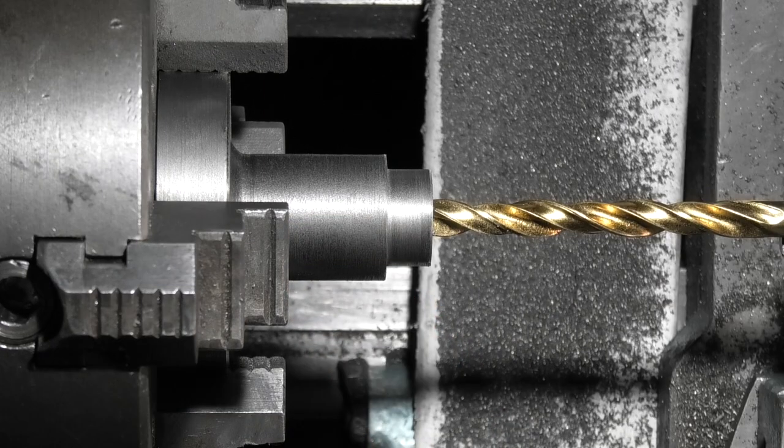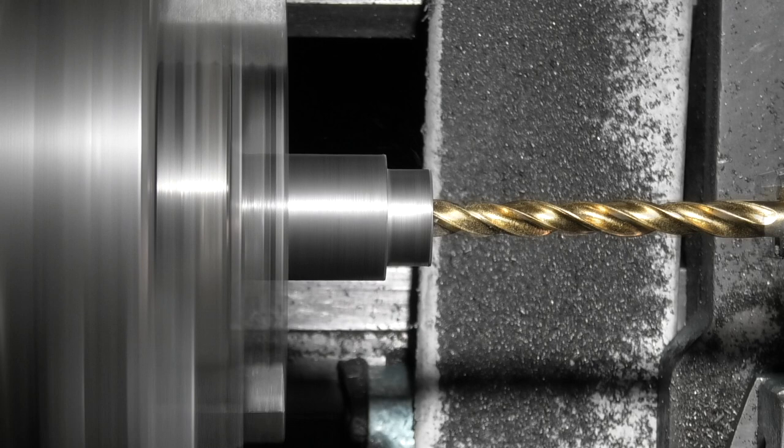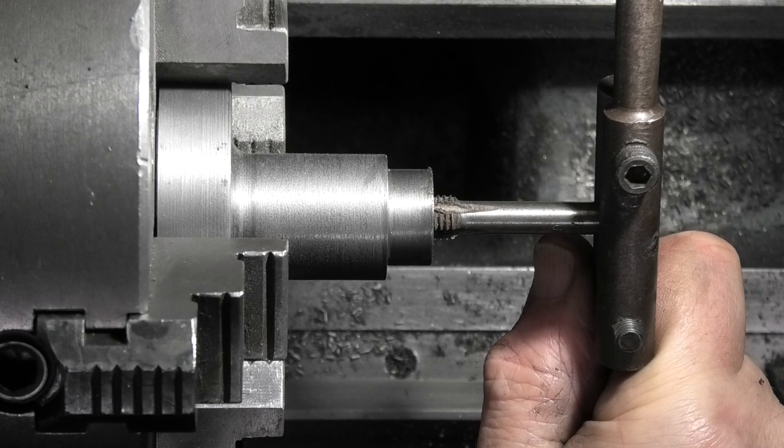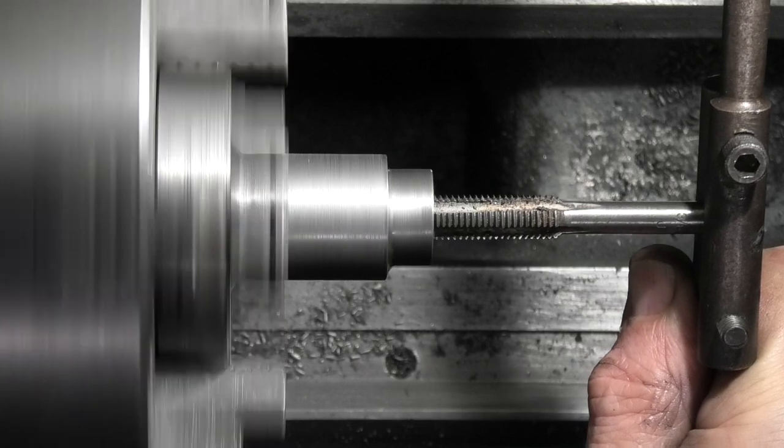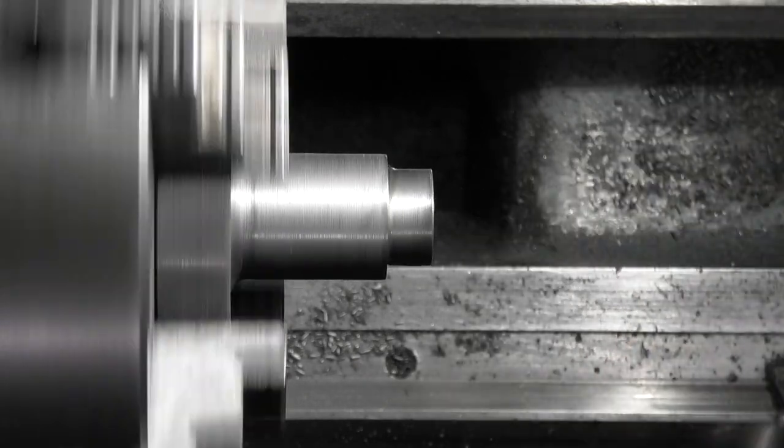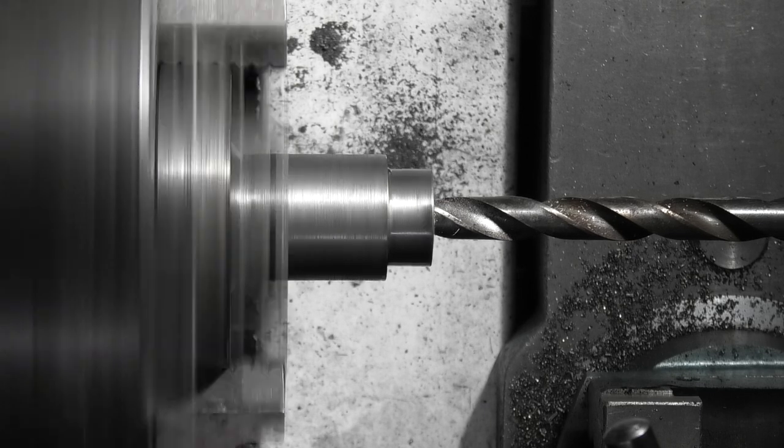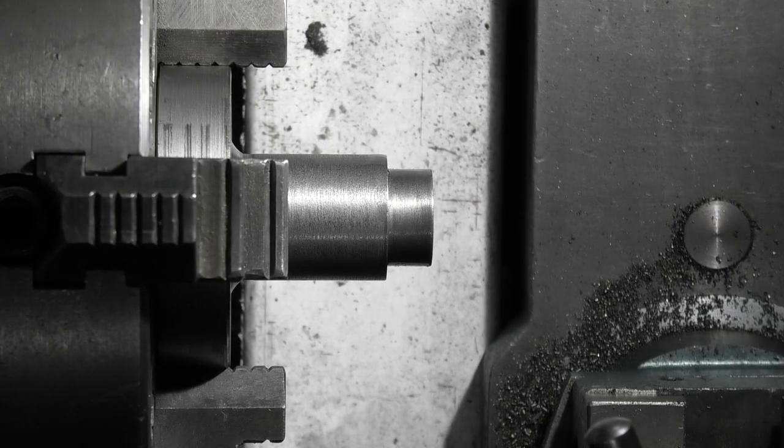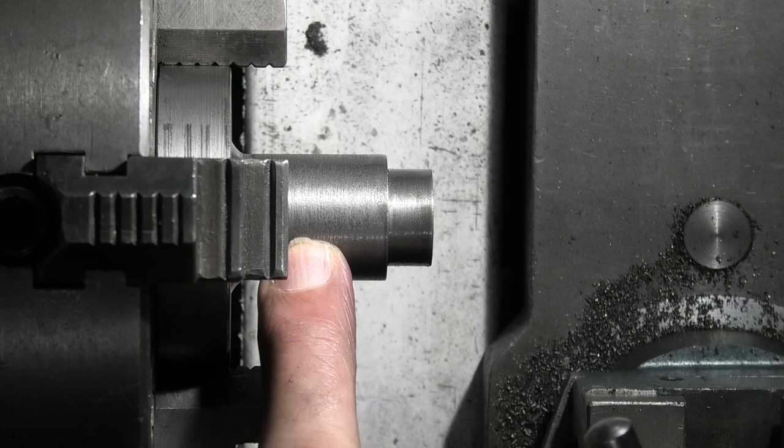Now drilling the tapping hole through, about three eighths. So that's finished now except for drilling and tapping M5 for a grub screw.